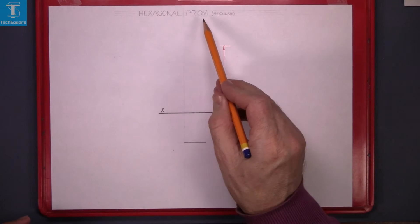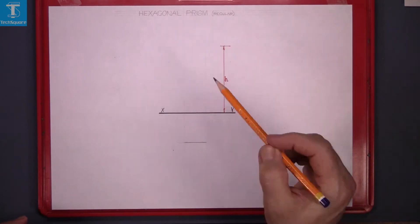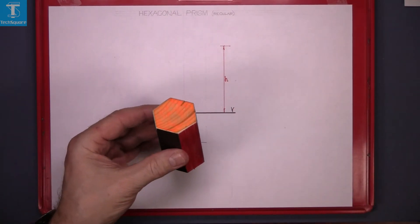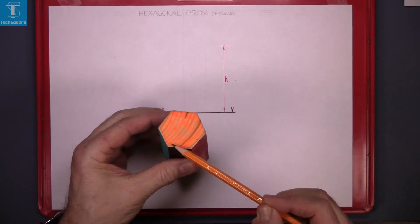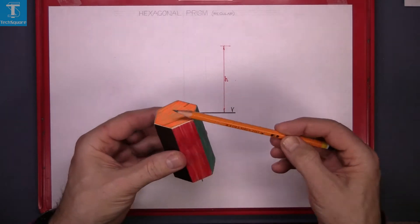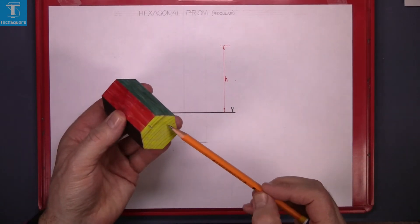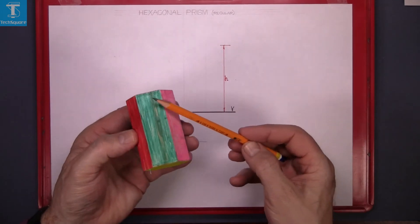Hexagonal prism — regular. This is the hexagonal prism: six sides and the same shape the full way along.